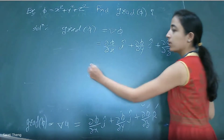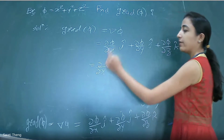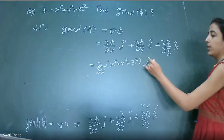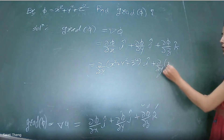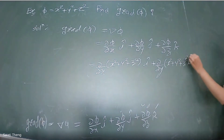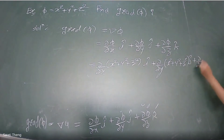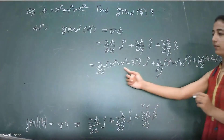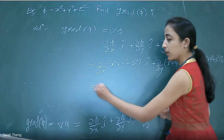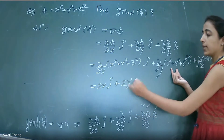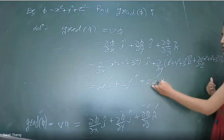So either differentiate separately, or apply the operator: ∂/∂x of (x² + y² + z²) î + ∂/∂y of (x² + y² + z²) ĵ + ∂/∂z of (x² + y² + z²) k̂. The partial derivative with respect to x gives 2x î, with respect to y gives 2y ĵ, and the third term is 2z k̂.